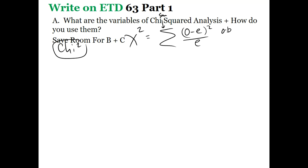The O is the observed — it's what you actually see; they'll provide that data in the question. The expected is what you would expect to see if things were perfect. This is why you want to know the different ratios in genetics or what a Hardy-Weinberg equilibrium should look like — numbers like mitosis and meiosis. The reason we use chi-squared is to figure out what deviations are caused by.